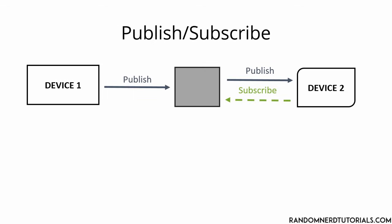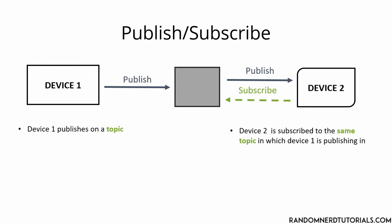The first concept is the publish and subscribe system. This means that a device can publish messages to other devices, or your device can subscribe to a particular topic to receive those messages. For example, Device 1 publishes on a topic. Device 2 is subscribed to the same topic that Device 1 is publishing in, so Device 2 receives the message.